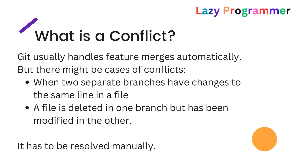The next very important question is: what is a conflict? In Git, all feature merges are done automatically unless there are specific cases where automatic merge won't work. Those cases include: when two separate branches have changes on the same line in a file — if both you and a teammate made different changes to the same line number, a merge conflict will occur. Another case is when you deleted a file but someone else made changes to that file and is trying to merge it. All merge conflicts must be resolved manually after discussion with your teammates.